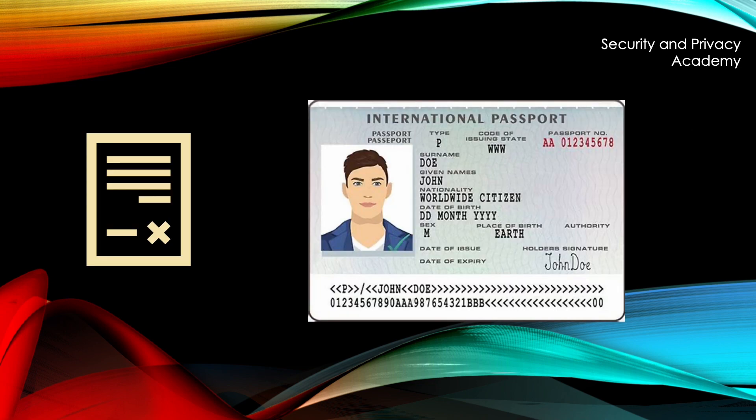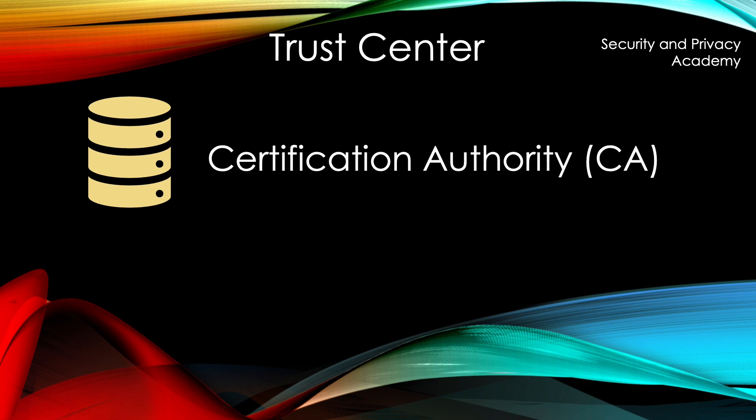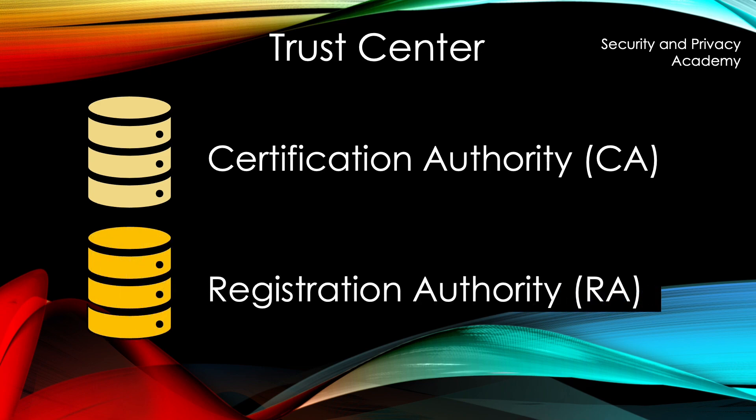As we've established previously, a certificate is basically a digital version of a passport. A certificate is used to prove that you are who you say you are, so a digital certificate means that people can trust your public key. In a PKI, we are dealing with a trust center. We have our certification authority, which we've covered in the previous video, and furthermore, we have our registration authority.